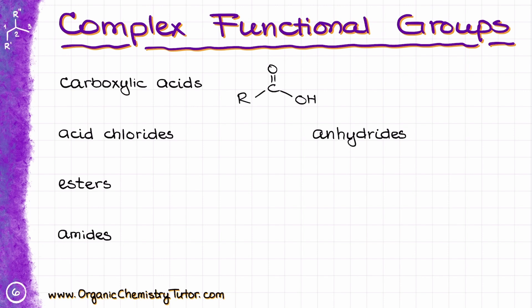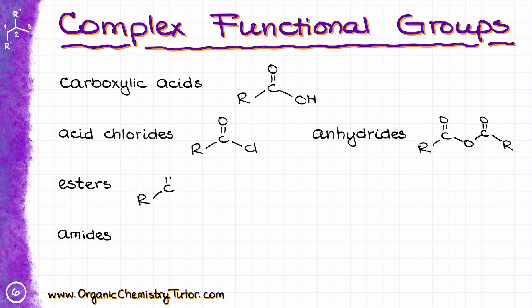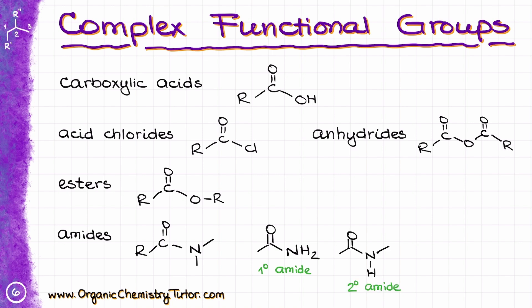Likewise, acid chloride has a structure with a carbonyl and a chlorine — it's not a carbonyl and an alkyl halide, but an acid chloride. Acid anhydride is probably the most complex because it has quite a few atoms to pay attention to. Ester will have a C=O double bond connected to an OR group. Amide has a carbonyl connected to a nitrogen, which can be connected to one R group, two R groups, or a couple of hydrogens — giving us primary, secondary, or tertiary amides.